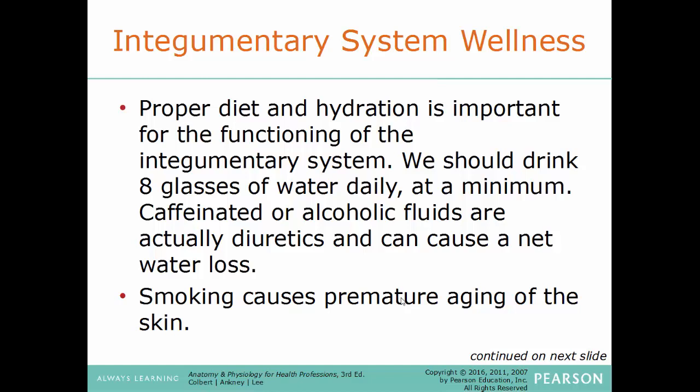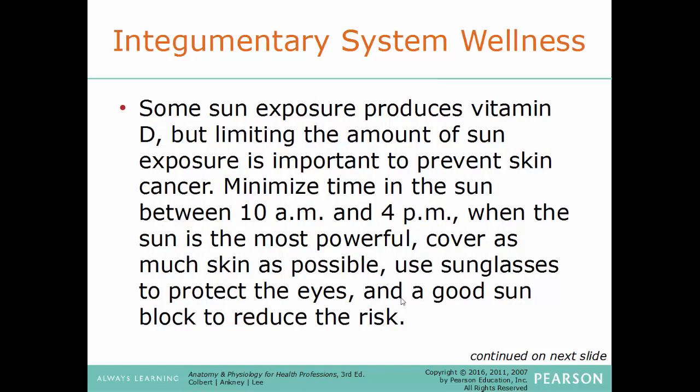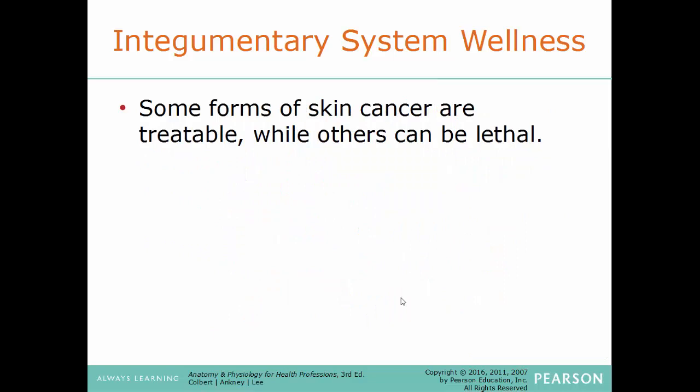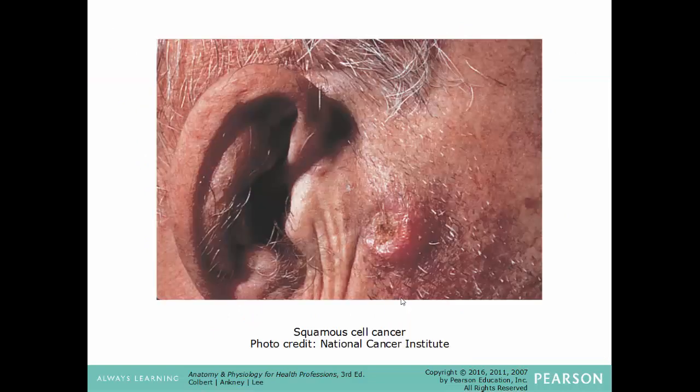Integumentary system wellness: proper diet and hydration is important to the functioning of the system. We should drink about eight glasses of water daily at a minimum. Caffeinated and alcoholic drinks are diuretics which will cause dehydration and net water loss. Smoking will cause premature aging of the skin. Some sun exposure produces vitamin D, but you should minimize time in the sun between 10 a.m. and 4 p.m., when the sun is most powerful. Cover up as much skin as possible, use sunglasses to protect your eyes, and use a good sunblock to reduce the risk. Some forms of skin cancer are treatable, but others are lethal.